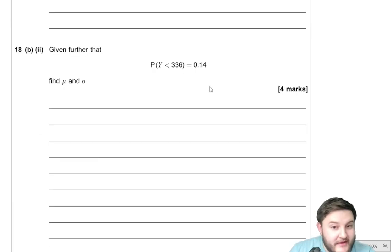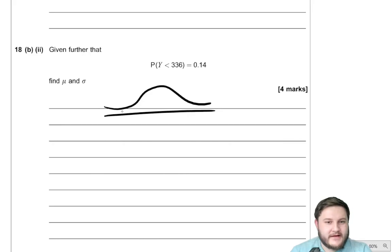Right, then, given further that the probability that Y is less than 336 is equal to 0.14, find mu and sigma. Well, basically, we can do exactly the same thing that we just did. We can use inverse normal on 0.14. So imagine we had a curve. 0.14 is going to be somewhere down here, because it's only 14% of the data. What is that critical value that would allow us to have 14% of the data there?